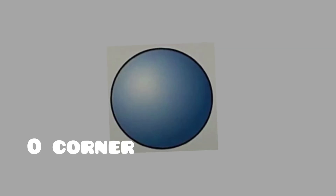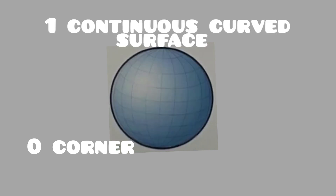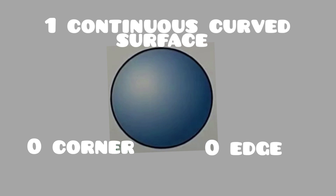This is a sphere. It has zero corners, one continuous curved surface, and zero edges.